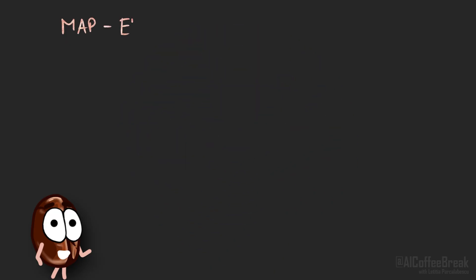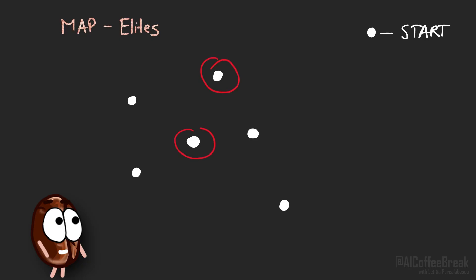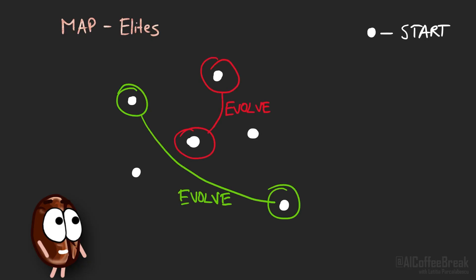That's where MAP elites comes in. Instead of starting from a single solution and gradually improving it, you begin with a wide range of random solutions, and over time you keep the best-performing ones across different behavior niches — these are your elites. New solutions are then generated by building on a random subset of such diverse elites, so evolution happens from many strong and different starting points, which helps cover a broader landscape of possibilities.